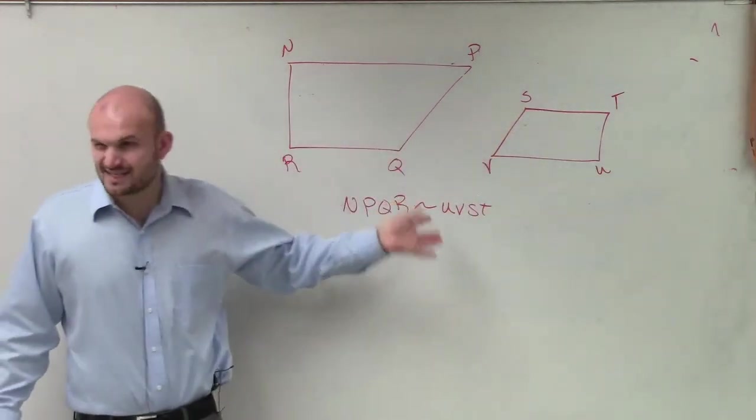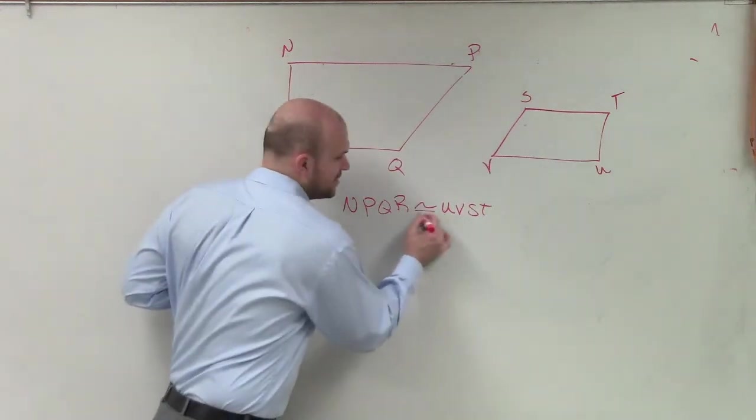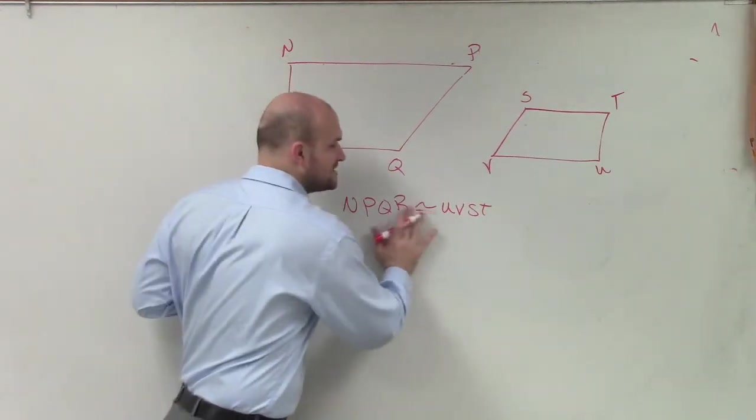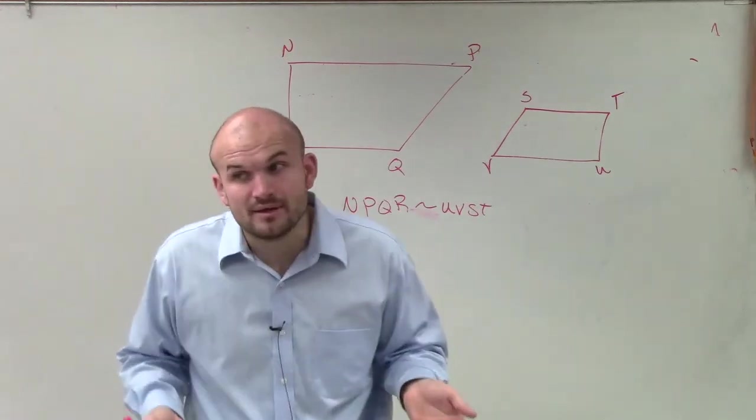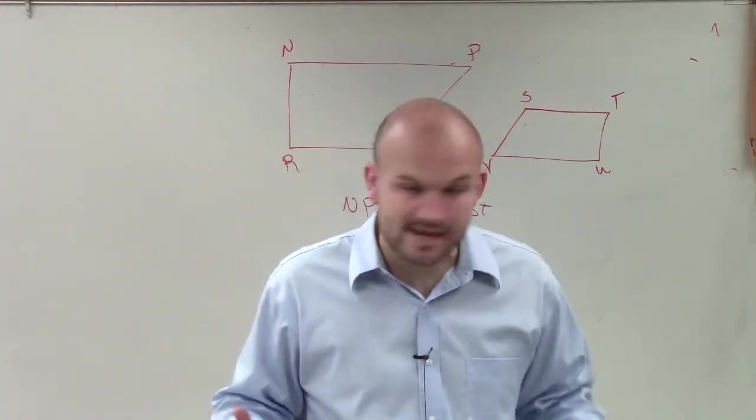So similarity, notice how that's not congruency. Remember, congruency looked like that, right? But we're just having similarity. So what that means is they're the same shape, but they're not necessarily the same size.